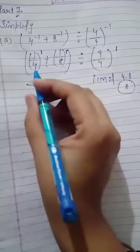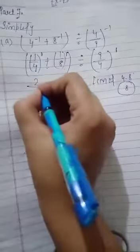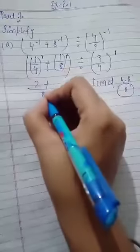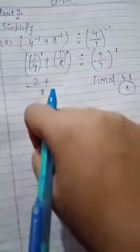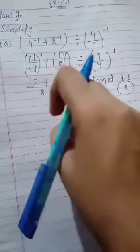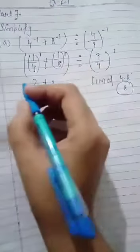8 is the LCM. 8 divided by 4 is 2, multiplied by 1 is 2. 8 divided by 8 is 1. The denominator is divided by the denominator, then multiply with the numerator. This is divided by 9 by 4 raised to power 1.